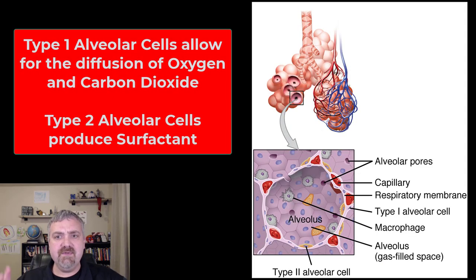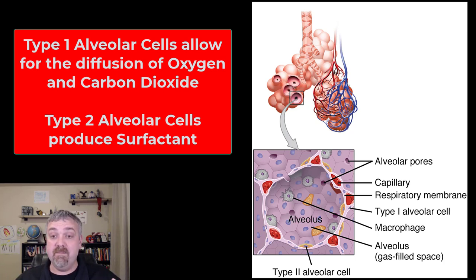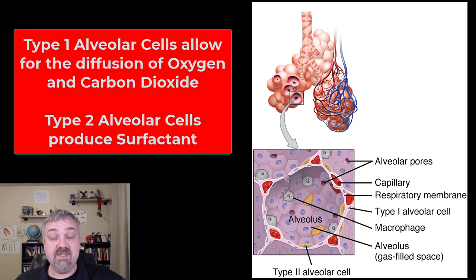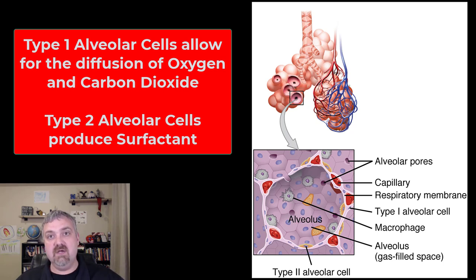One more image to talk about the cell types that you see here. There are going to be three major cell types. One, the type 1 alveolar cell — that's going to be about 97% of these cells. That's the simple squamous epithelium that is real thin and allows for the diffusion of gases, trading oxygen for carbon dioxide. Type 2 alveolar cells are going to produce surfactant. Surfactant is very important because it reduces the surface tension in the alveoli and keeps them from deflating. If you don't have enough surfactant, your lungs could collapse because of that change in tension.